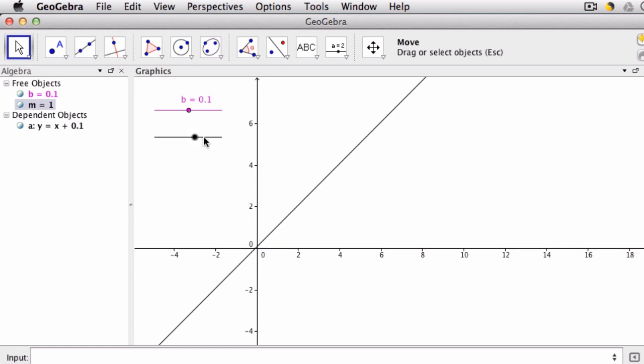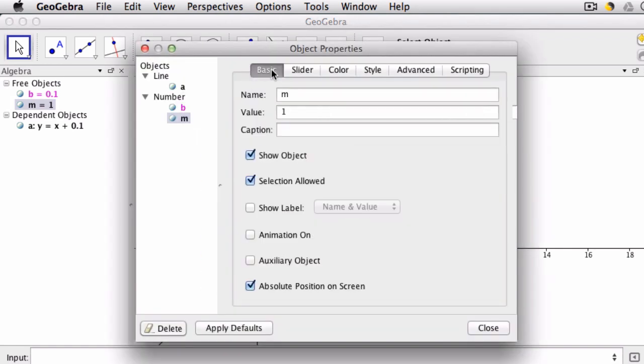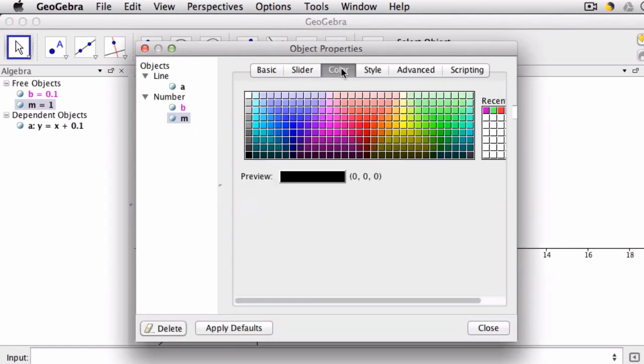That's a little better. And here, this is the m variable. You want to show the label, maybe give it another color, and close.